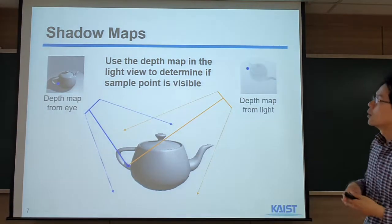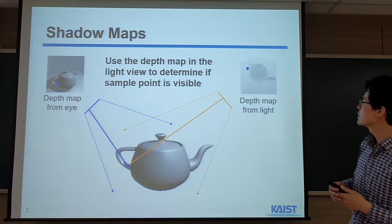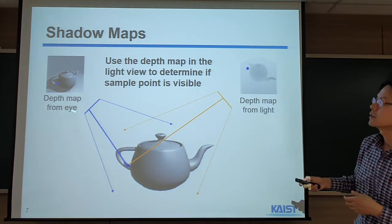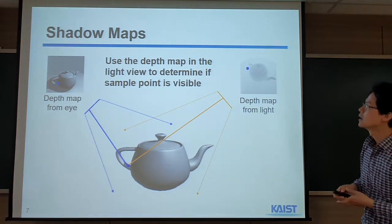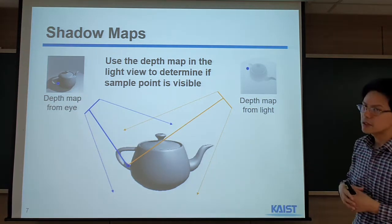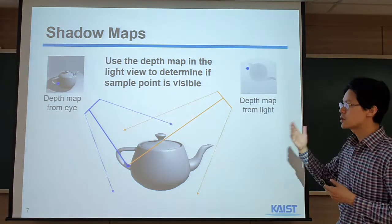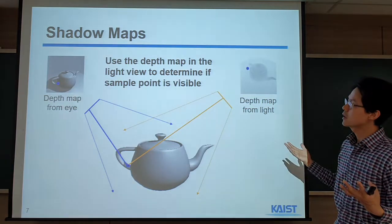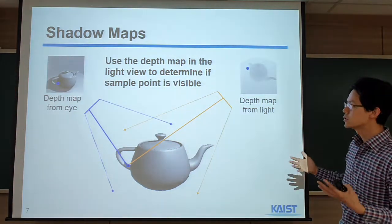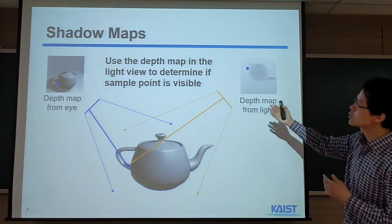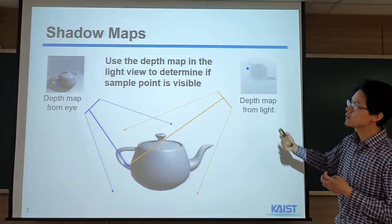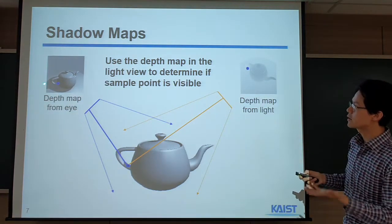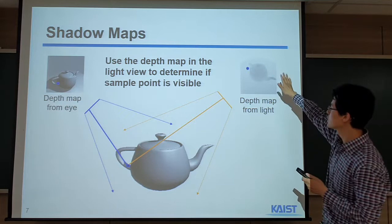By doing that, we can support this shadow effect. This is one way of using the shadow map — this texture mapping as a shadow map — to support the shadow effect. It's a little difficult to support this shadow effect directly within one pass of rasterization. There have been a lot of techniques to do that. This is a very old technique, but it's one of the very groundbreaking techniques to support the shadow effect within rasterization by using the shadow map.